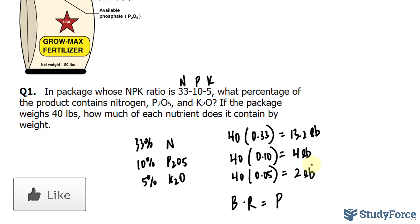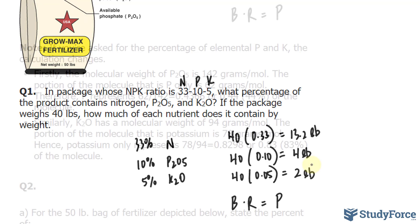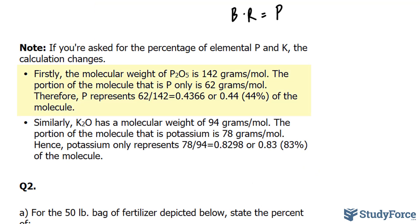Let's take this a step further. If you're asked for the percentage of elemental P and K, things change a little. Firstly, the molecular weight of P2O5 is 142 grams per mole. I won't show you how this is derived in this video, but it's fairly easy to calculate using a periodic table.